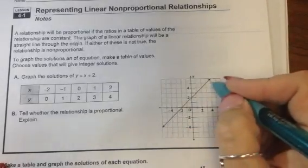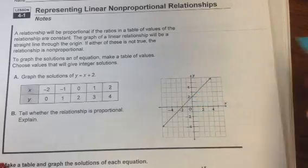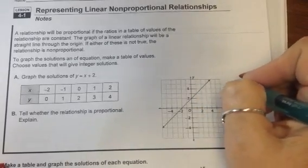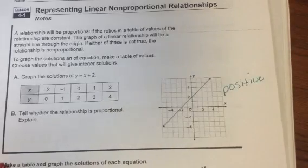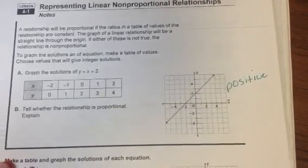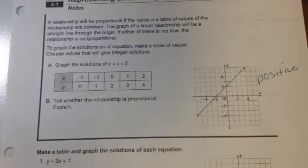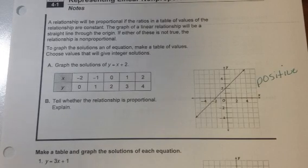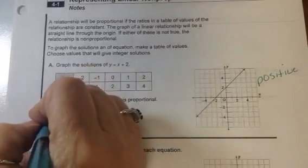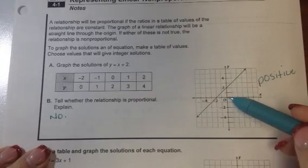If I look at the slope of this line, reading from left to right, it's going up, so that tells me that the slope is positive. I want to look at that every time so that we get an idea of what our slope looks like. The question says: tell me whether the relationship is proportional and explain. You can tell that no, it is not proportional because it does not go through the origin.